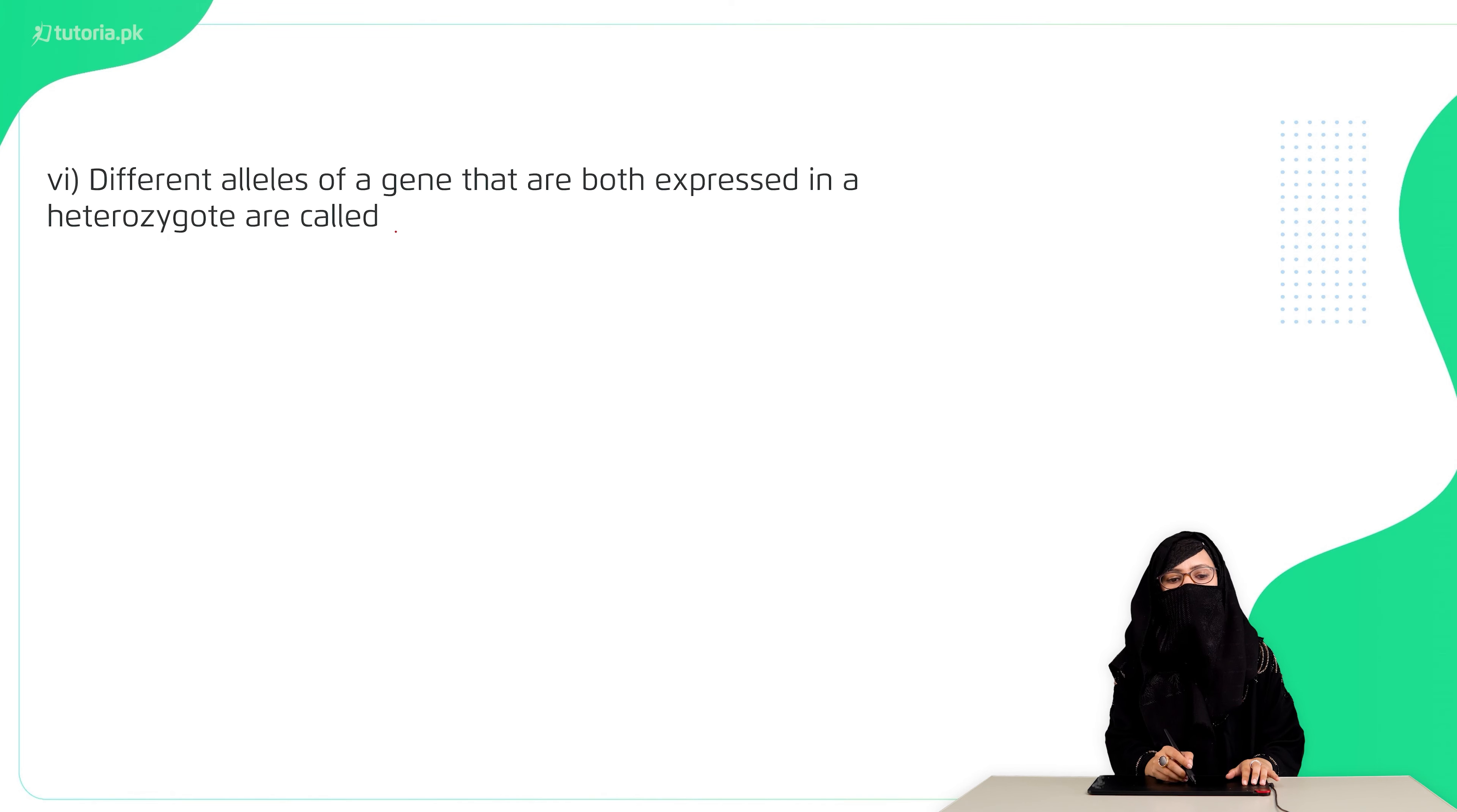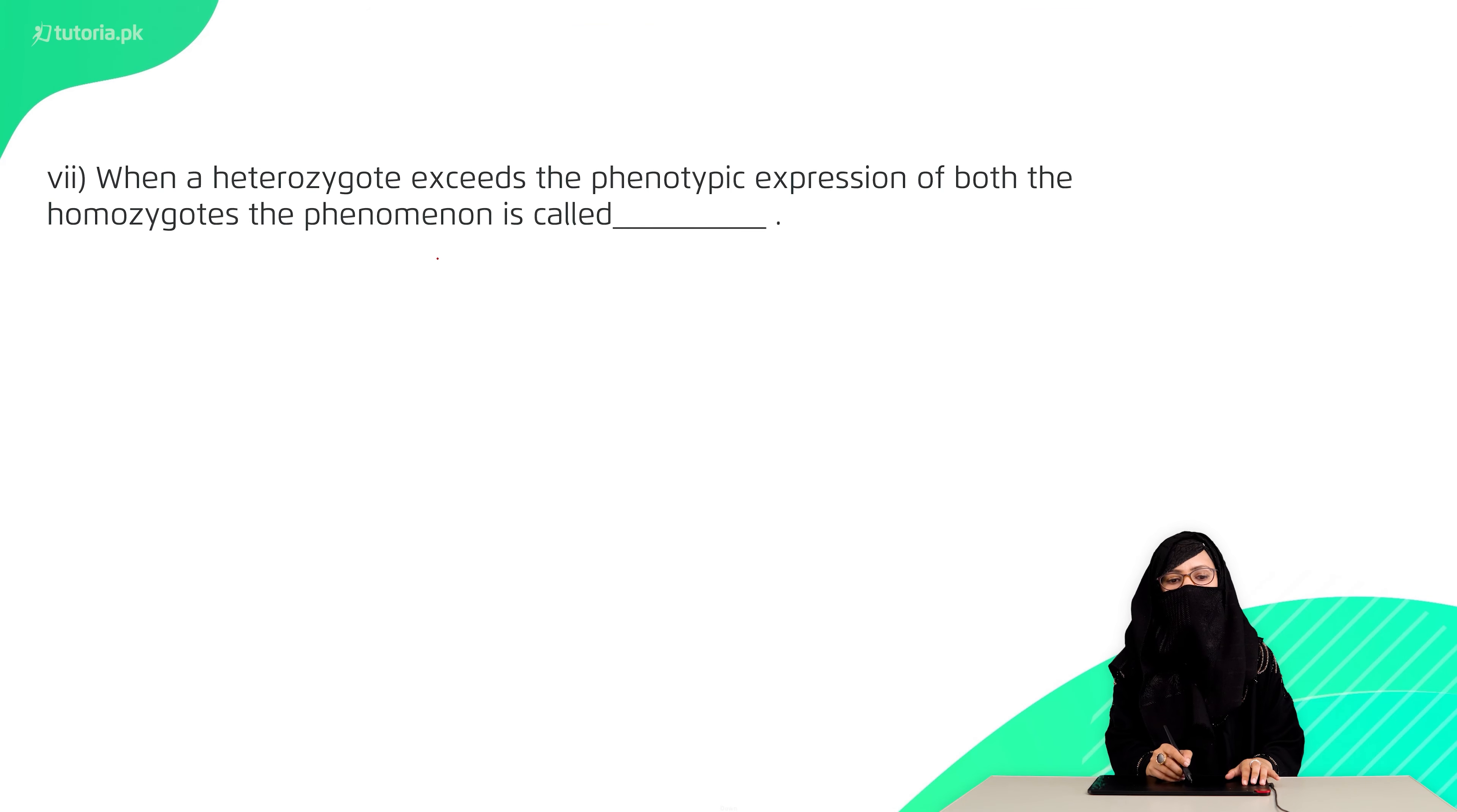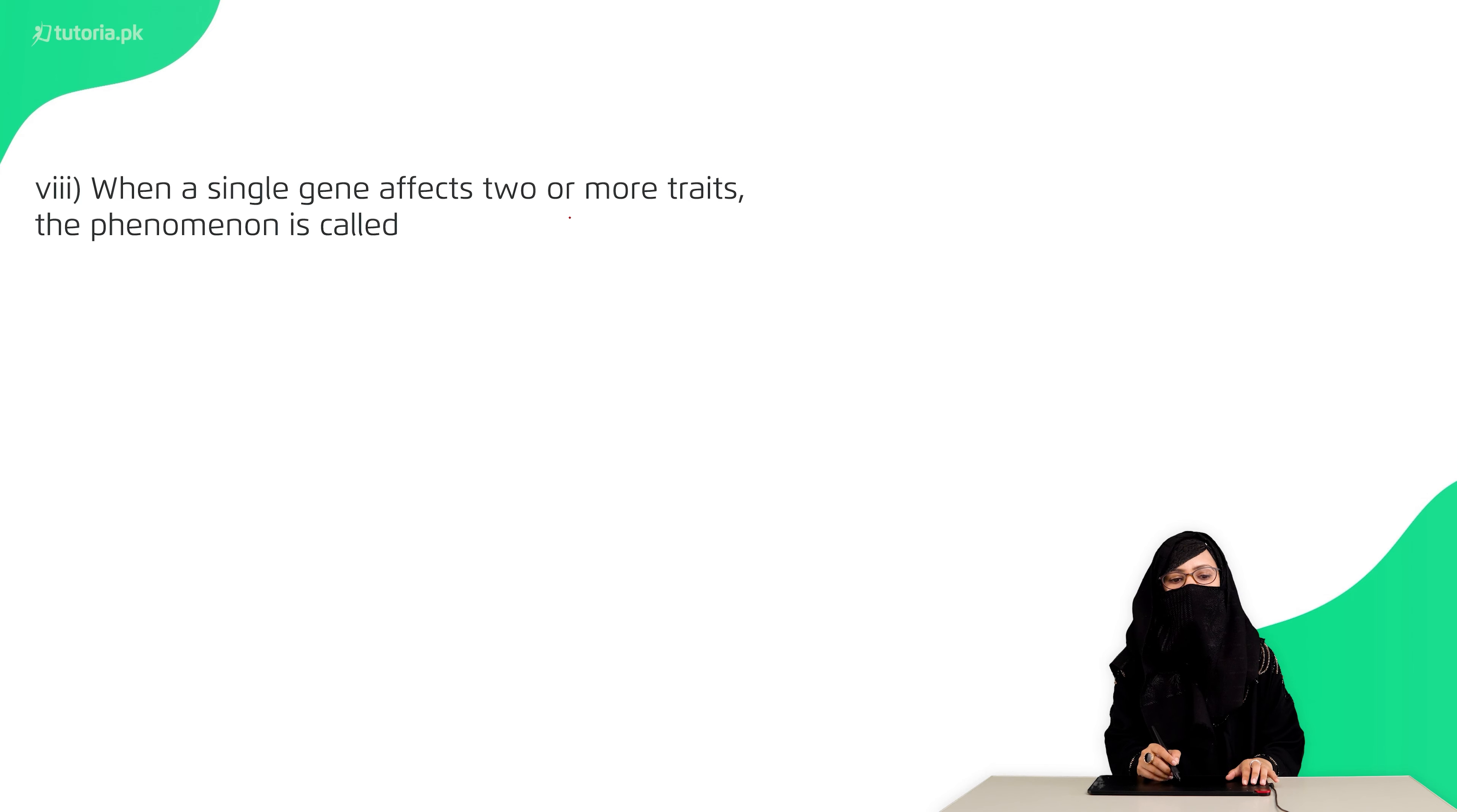Sixth, different alleles of a gene that are both expressed in a heterozygous state are called codominance. Seventh, when a heterozygote exceeds the phenotypic expression of both the homozygotes, the phenomenon is called overdominance.